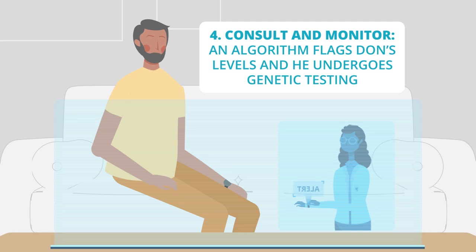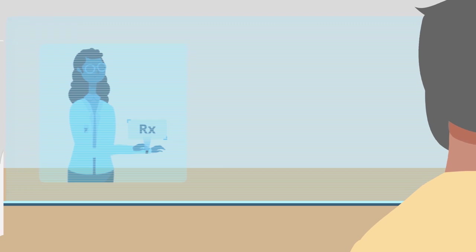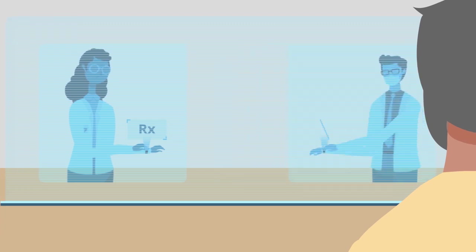Though he's adhering to his care plan, Don's glucose levels are rising. Based on a collaborative practice agreement, the pharmacist increases the dose of medication and an automatic notification is sent to Don's physician.